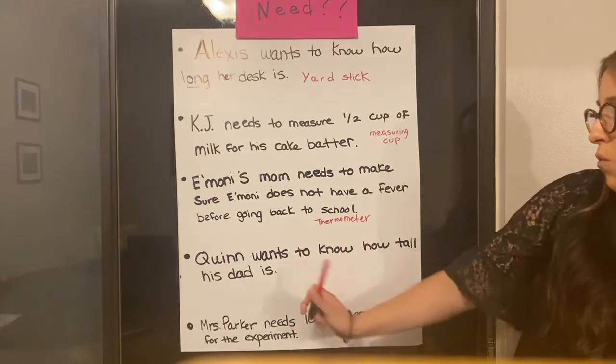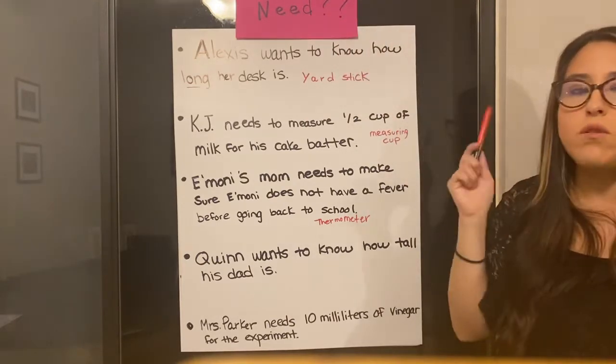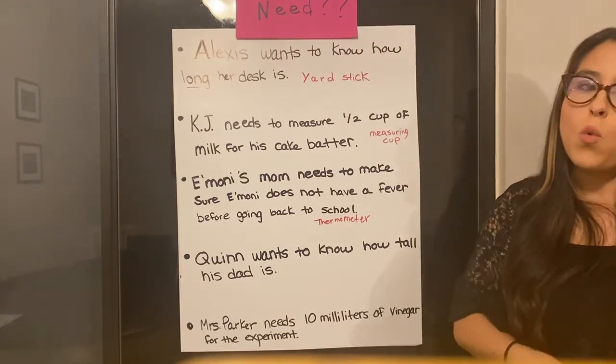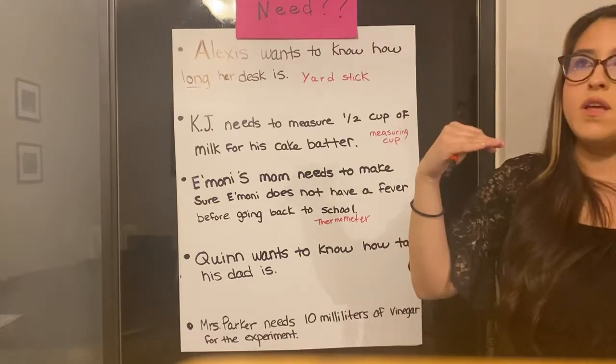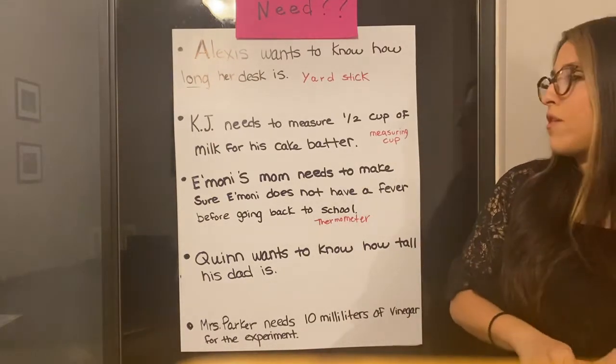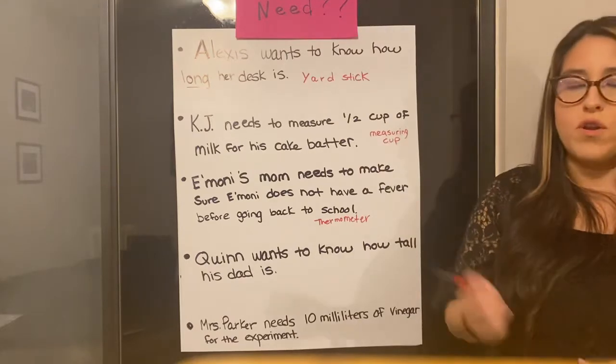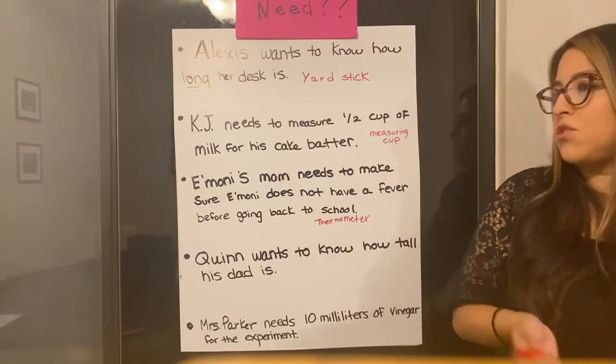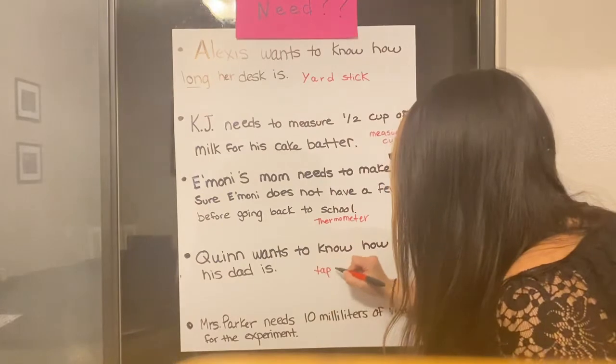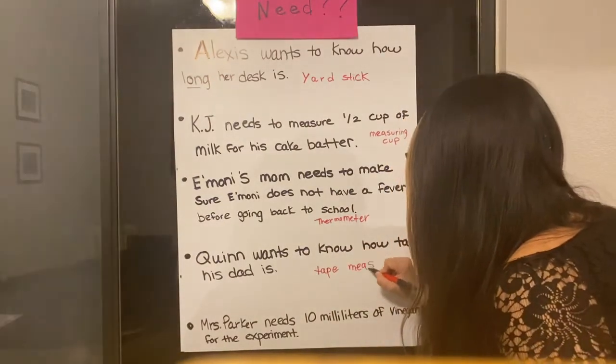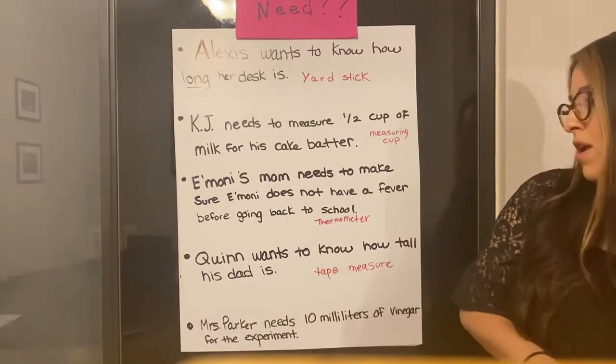Next question. Quinn wants to know how tall his dad is. What do they need to check how tall your dad is? We can use, now there's more than one right answer. We could use a yardstick, but a yardstick is three feet. Most dads are taller than three feet. So that wouldn't quite work unless we were going to double it up or have more than one yardstick. So we have to think what the best choice would be. I'm going to go with a tape measure. Tape measure would be the best choice for me if Quinn wants to measure his dad.